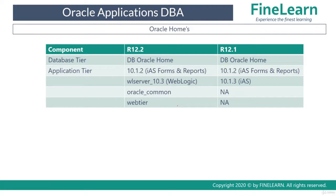Now let us see in detail what are all the Oracle Homes in Oracle E-Business Suite. On the database tier we have only one Oracle Home. In the application tier we have the 10.1.2 Oracle Home for Forms and Reports, the WebLogic Oracle Home for the application server, and Oracle Common and Web tier. So in the database tier there is only one Oracle Home, but in the application tier there are four Oracle Homes. As an application DBA doing maintenance, you have to apply the latest patches for all of these components.